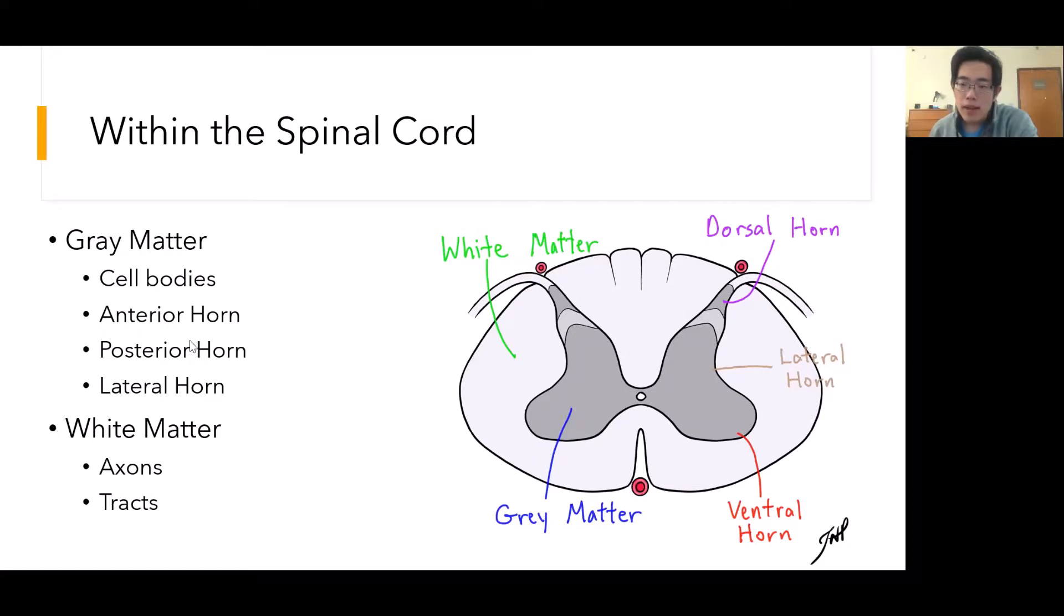The white matter can also be subdivided into several parts, but I won't get into that right now. The main point to remember is that white matter can be divided up into different tracts of axons that carry specific information.